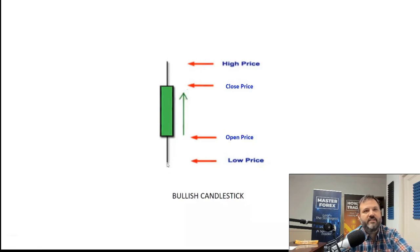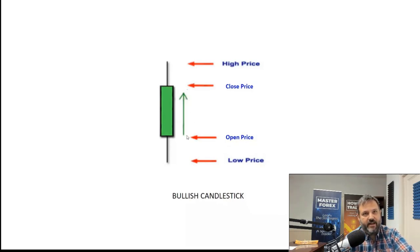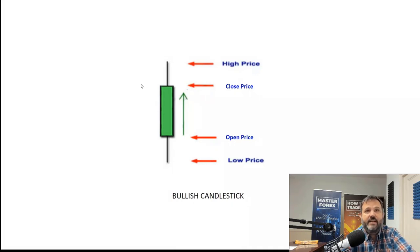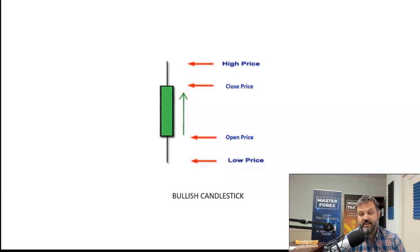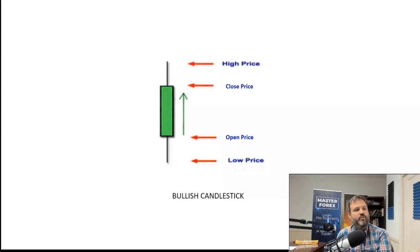The first one we want to look at is just a basic candle — a basic bull candlestick. Very simple. This is the low down here at the bottom, this is the high, this is where it closes, and right here is where the price opens. These work no matter what timeframe you're looking at — daily, one hour — these patterns all work the same.